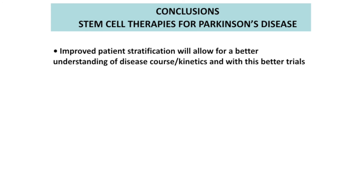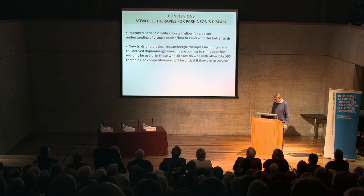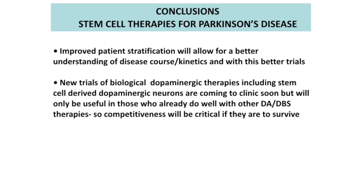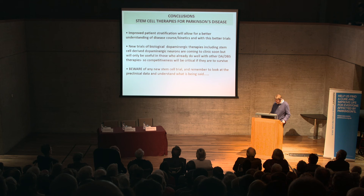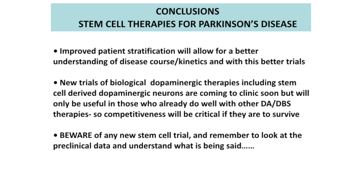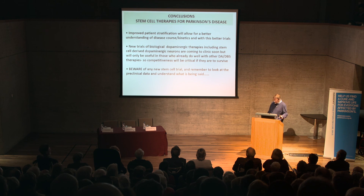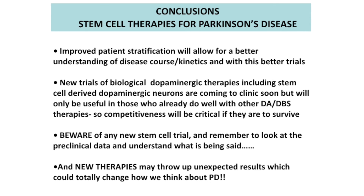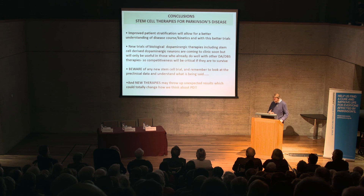To summarise: stem cell therapies are not for everybody — we need to be careful about patient selection to get the best results. We are getting to clinic with stem cells and they will be coming in the next two to three years. Be aware: if you want a stem cell transplant for Parkinson's tomorrow, there are several hundred clinics around the world that will offer it and charge between five and twenty-five thousand dollars — with no scientific basis. This field is also throwing up unexpected results that have totally changed our thinking on Parkinson's disease.